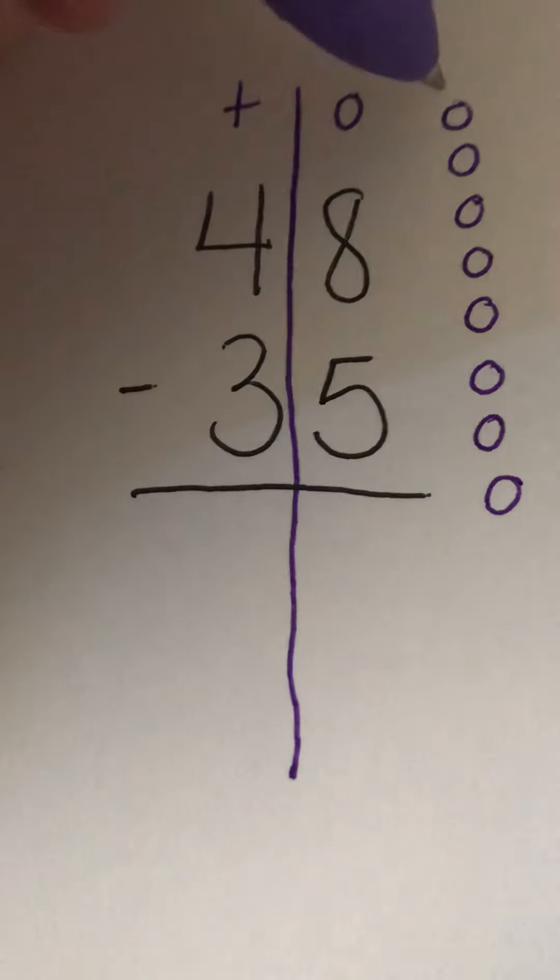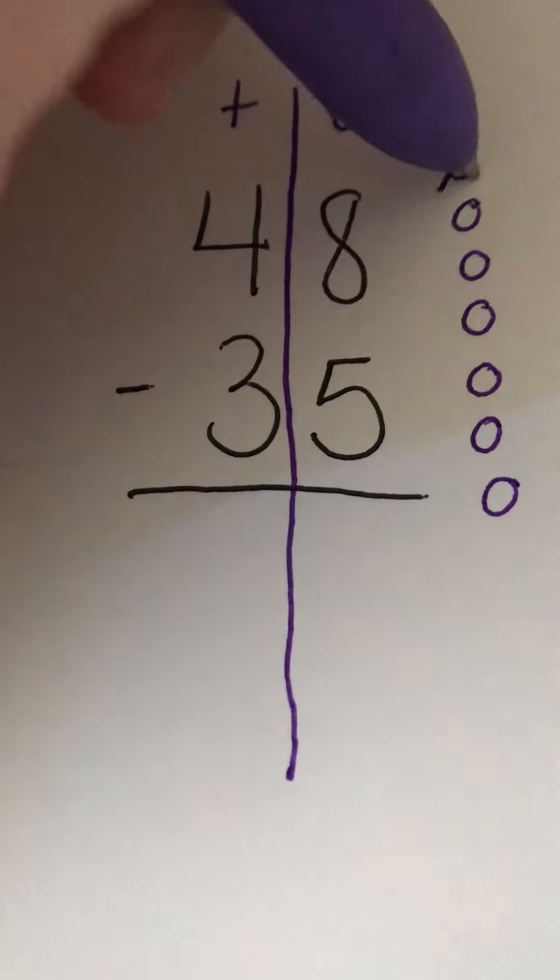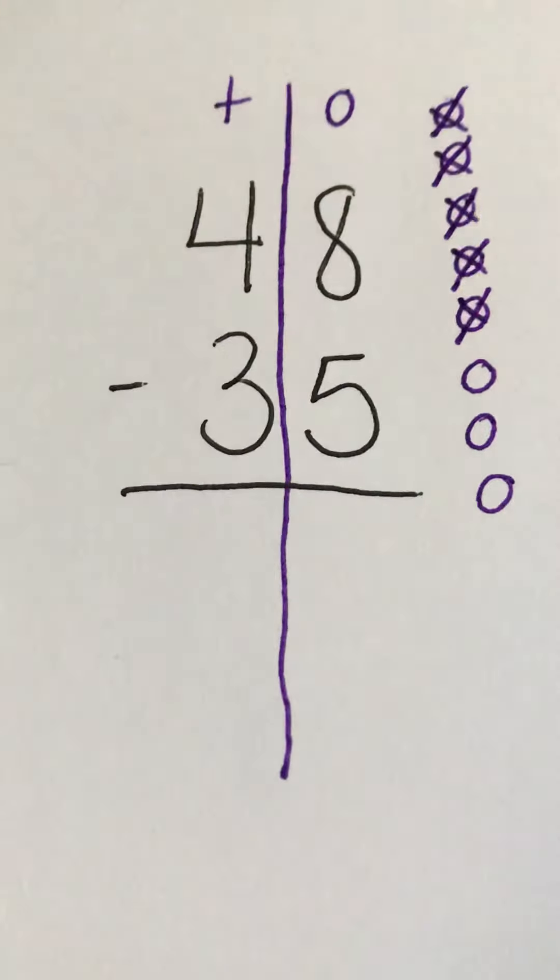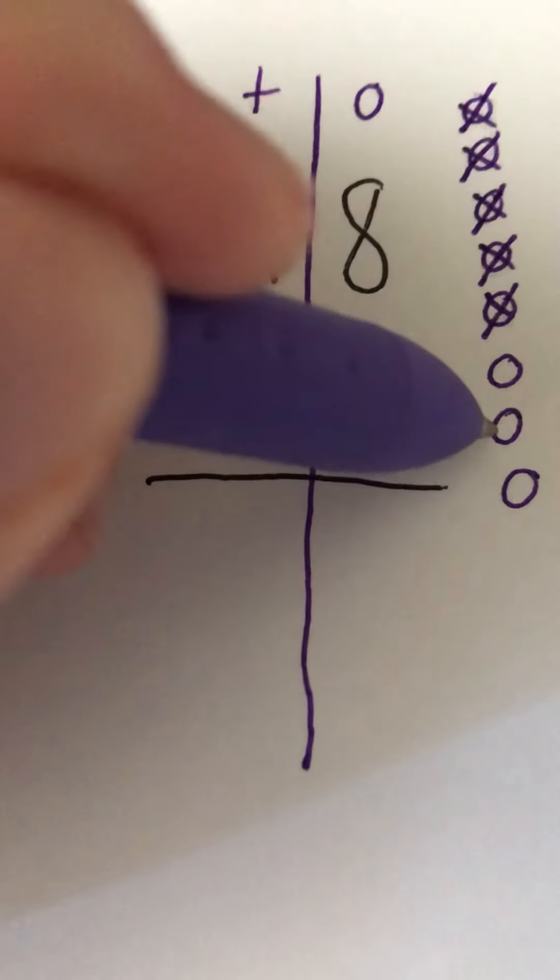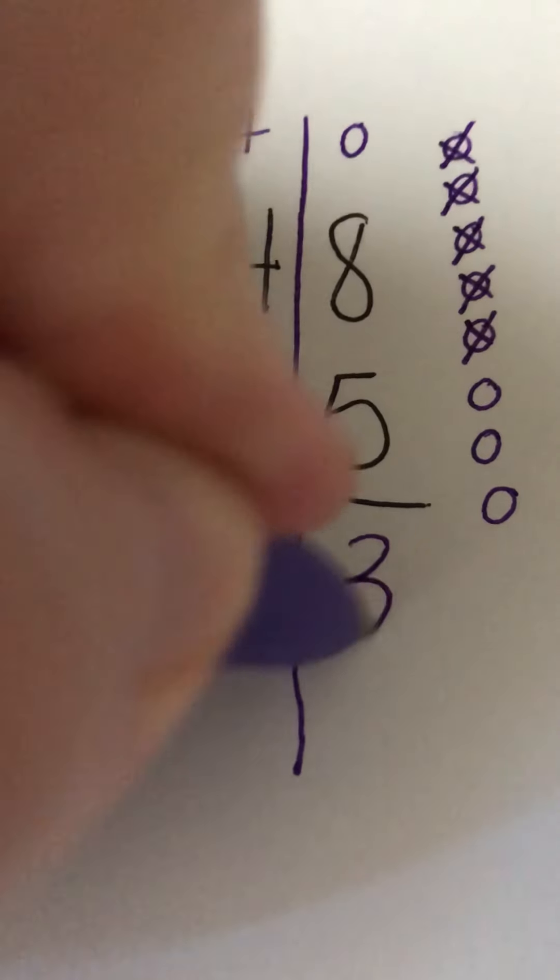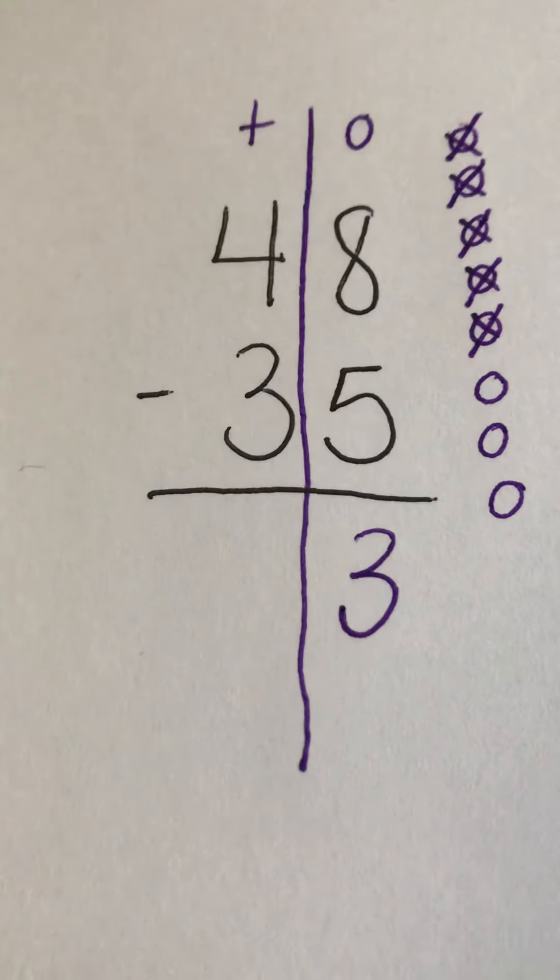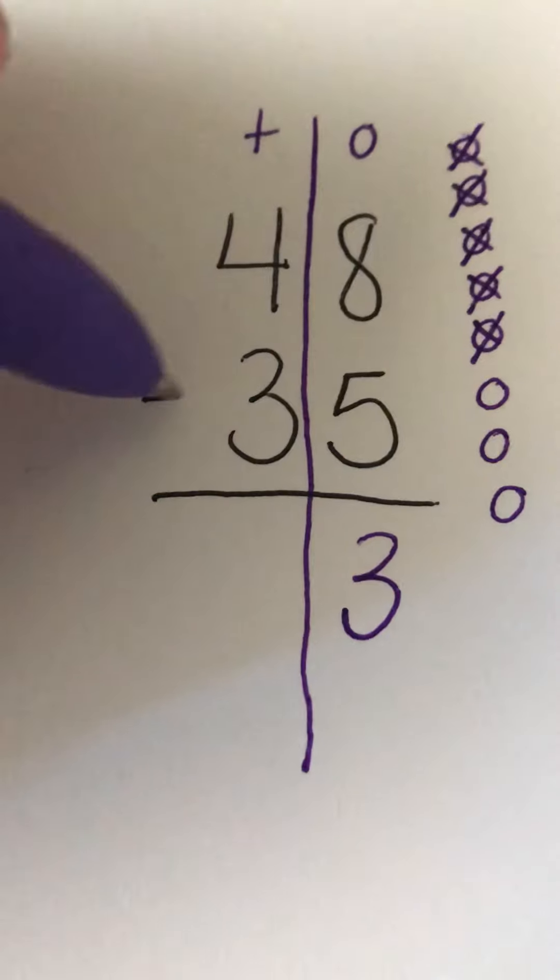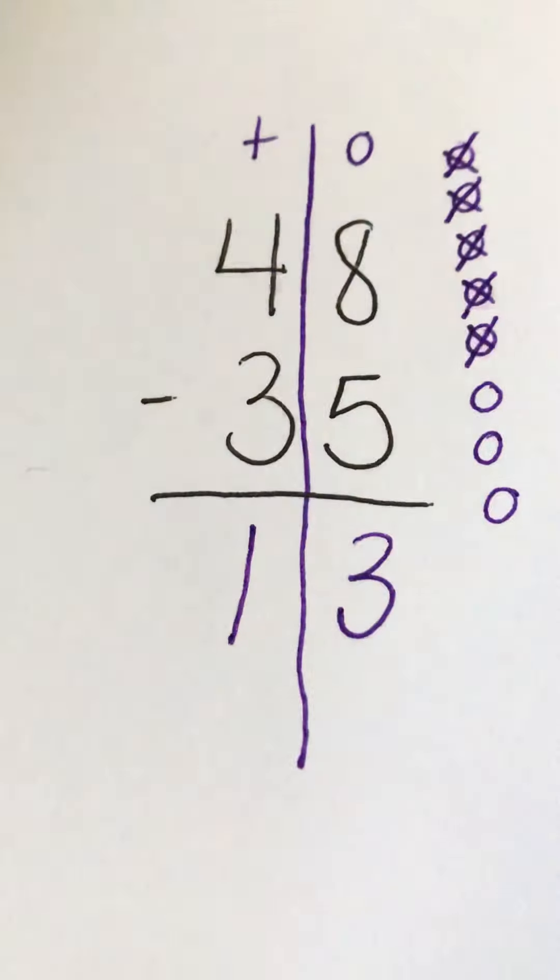I'm going to take five away. One, two, three, four, five. That leaves me with one, two, three circles left. Eight minus five equals three. In my tens place, I have four minus three, which equals one.